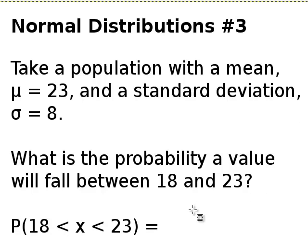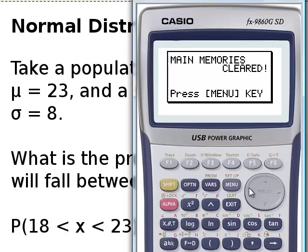We write that in our proper terminology. The probability that our unknown is between 18 and 23, and we turn on the graphics calculator.